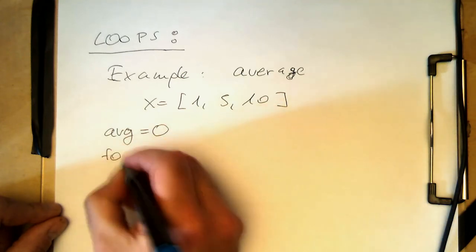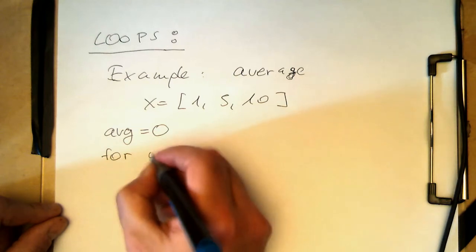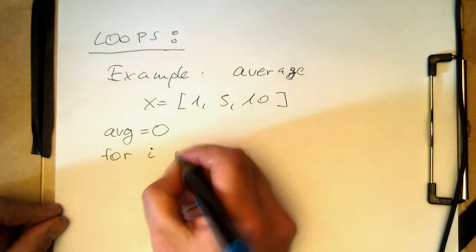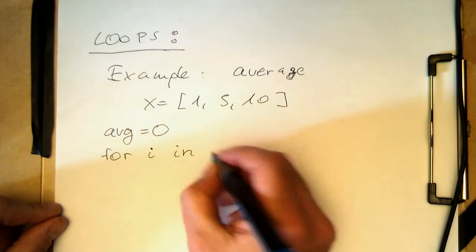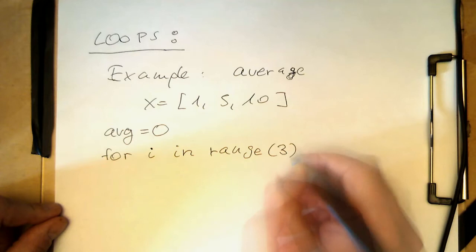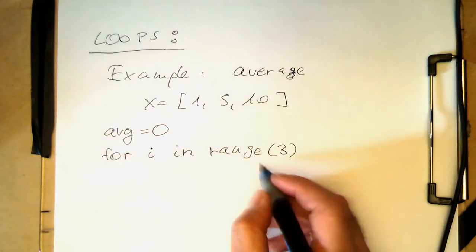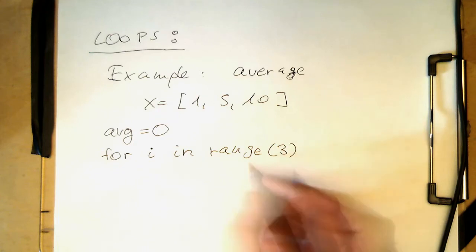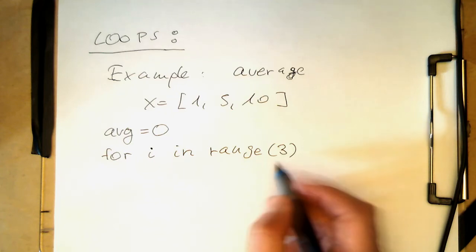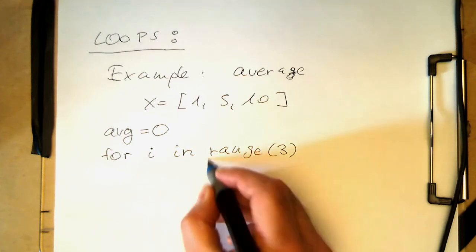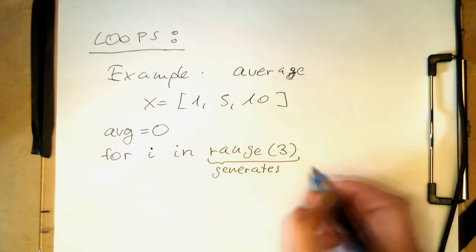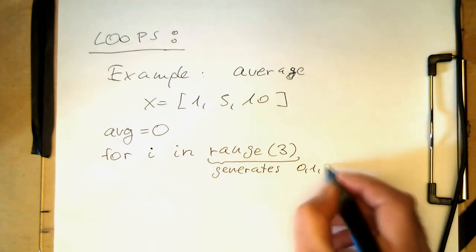So we write for and then take an index variable i. And now what's different to other languages is we write now i in range of 3. Of course, we have got three elements here. So remember the range operator here. So range generates us the numbers from 0 to 2. So that generates 0, 1, and 2.